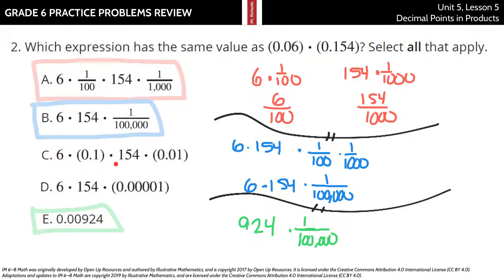C doesn't work because it's not six times a tenth, it's six times a hundredth, and it's not a hundred fifty-four times a hundredth, so C doesn't work.